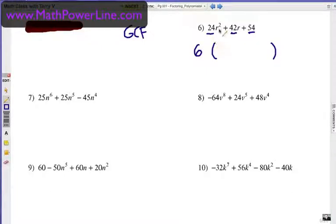Then we're going to look at the variable parts. This is r squared, r which is r to the first, and there is no r on the last term. I can't take an r and put an r on the outside because there's not at least one r in all terms. So basically six is the greatest common factor.